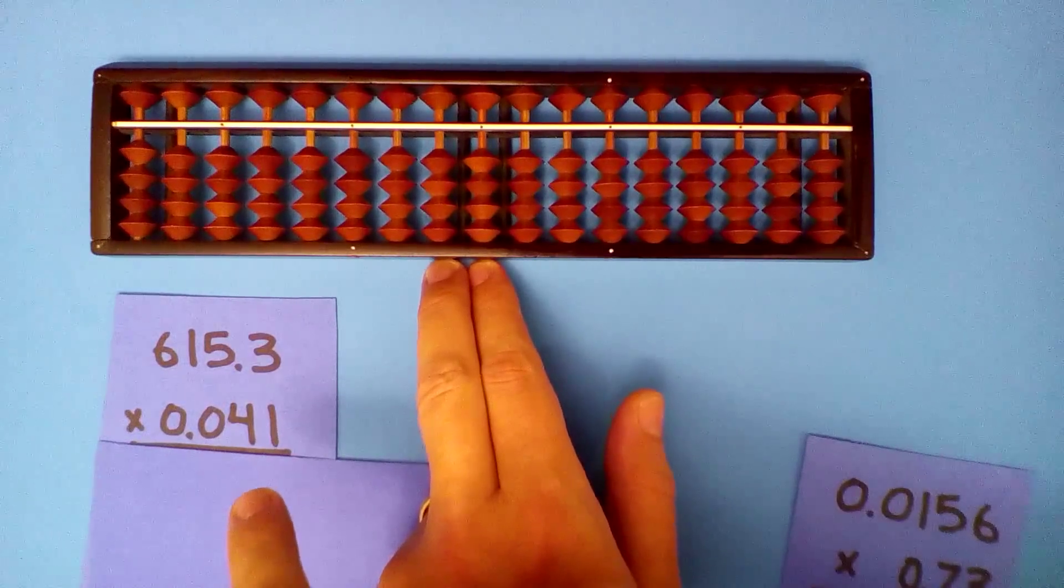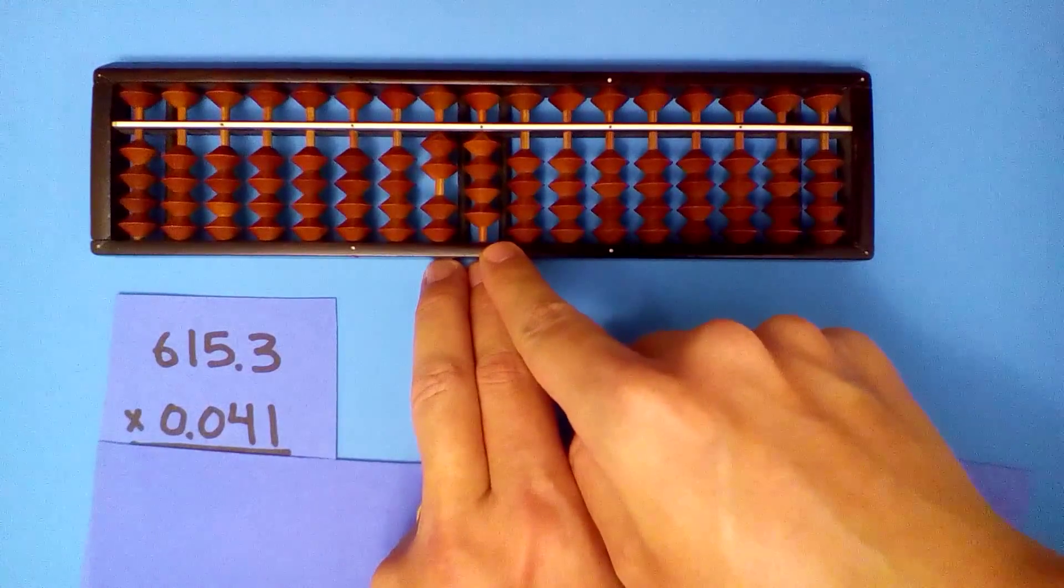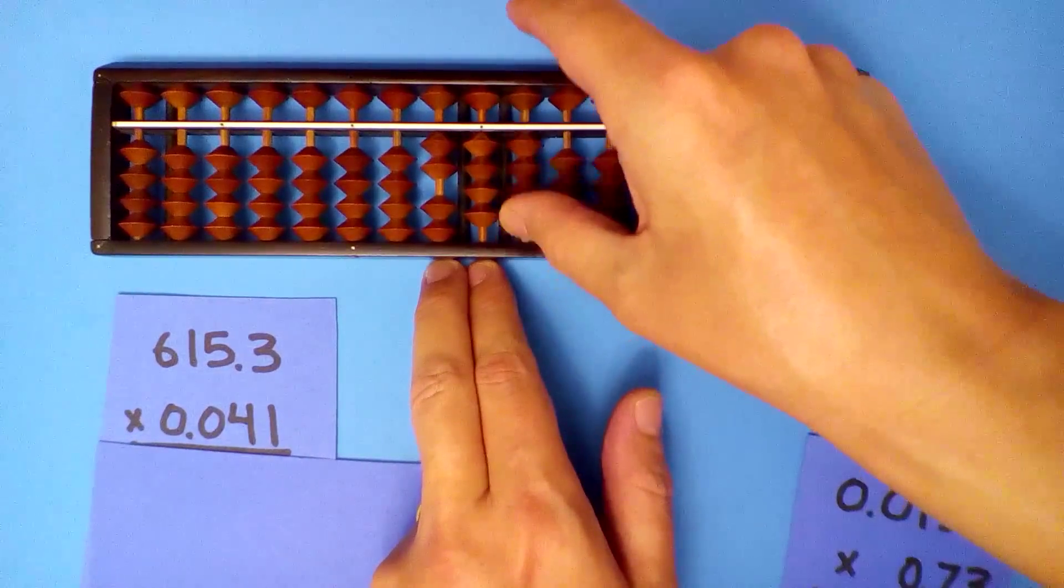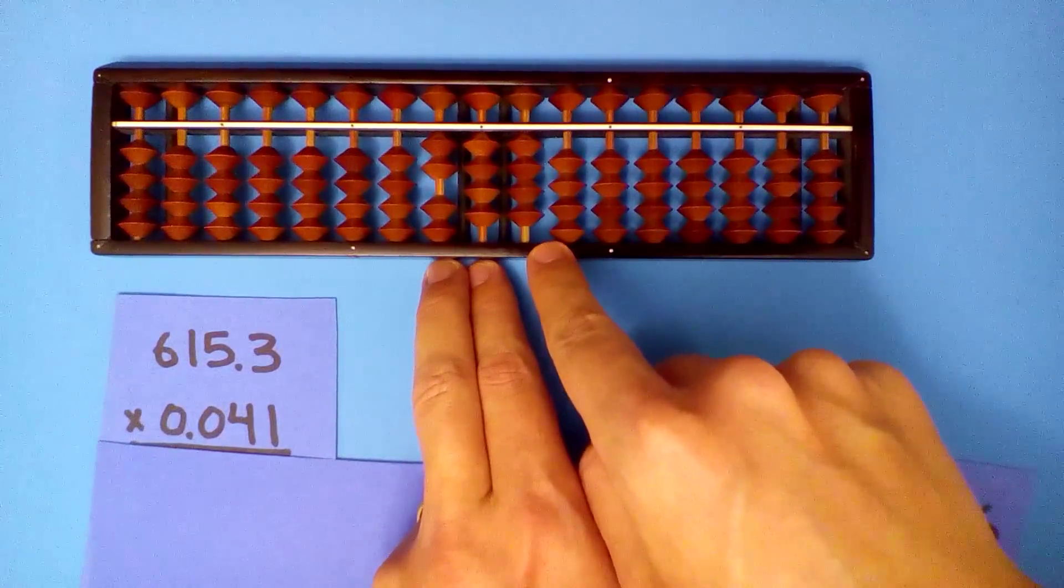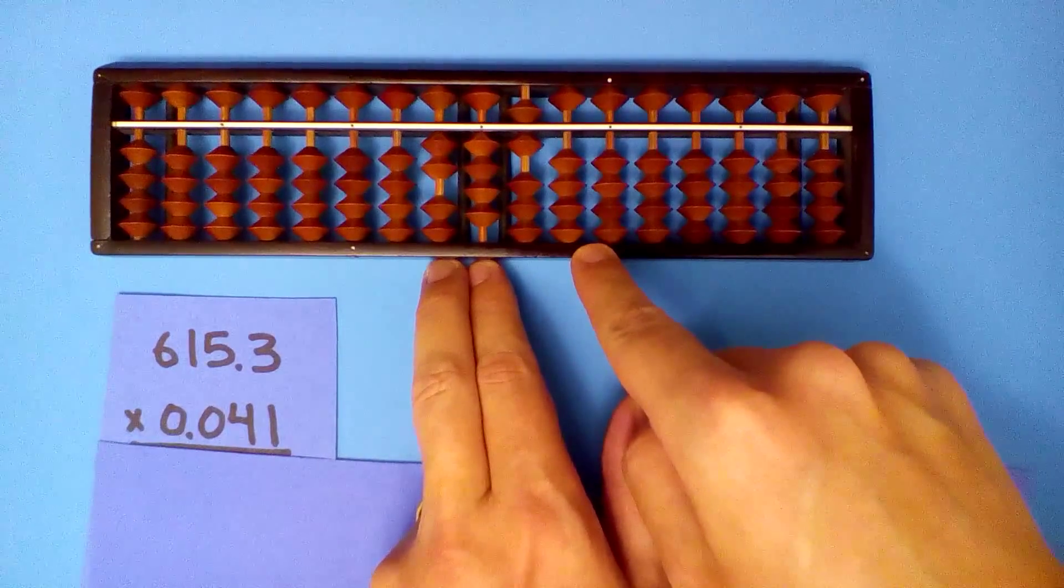Use the four first. Four times six, twenty-four. Four times one, four. Four times five, twenty. Four times three, twelve.